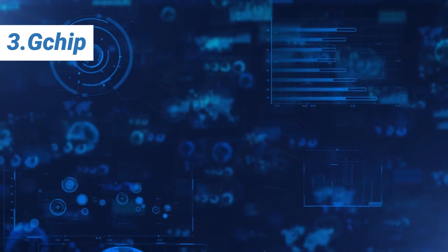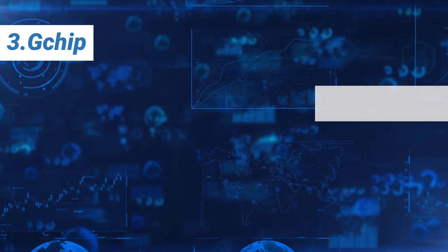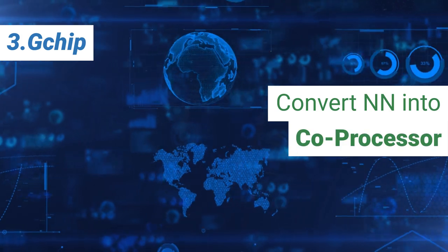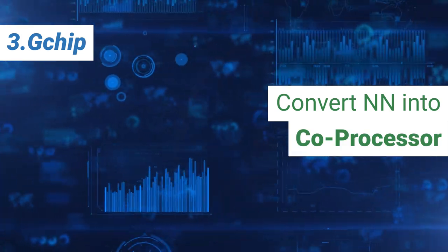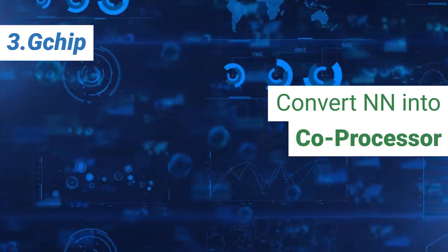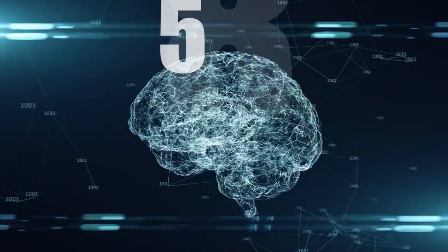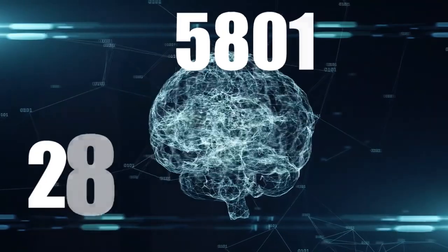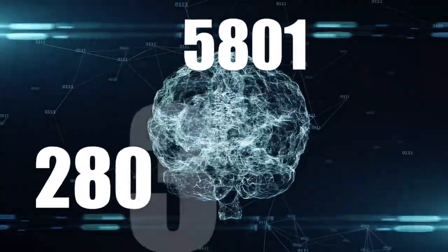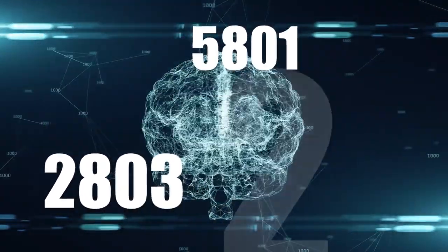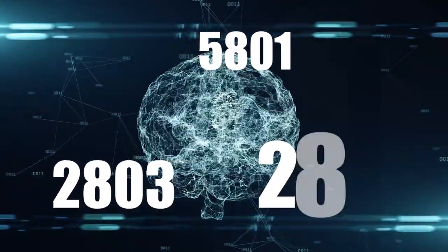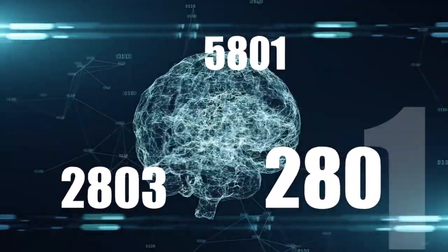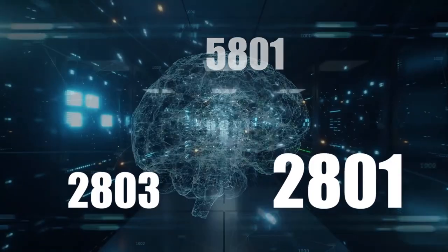Finally, on the third step, GCHIP is used to import the pre-trained network into any GTI chips — being 5801, 2803, or 2801 — for high-speed inferencing tasks of classification, detection, or segmentation.